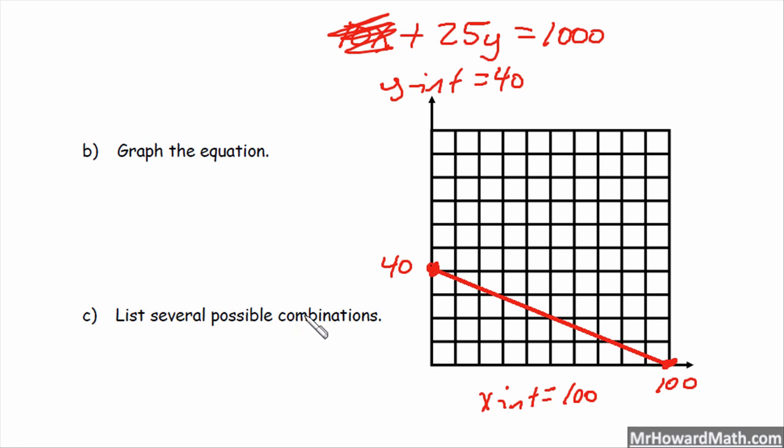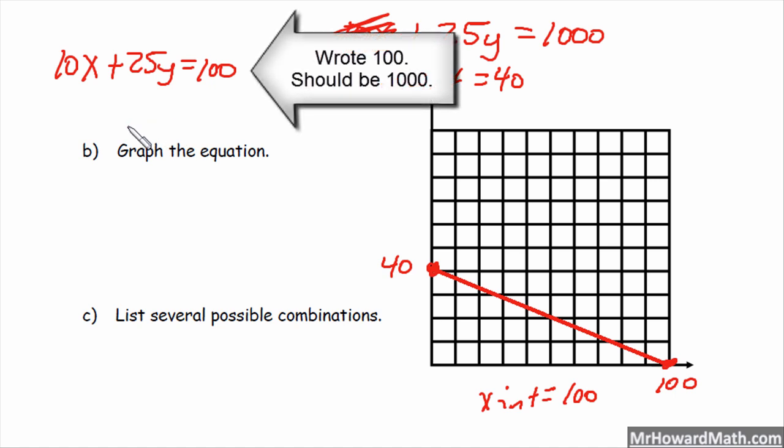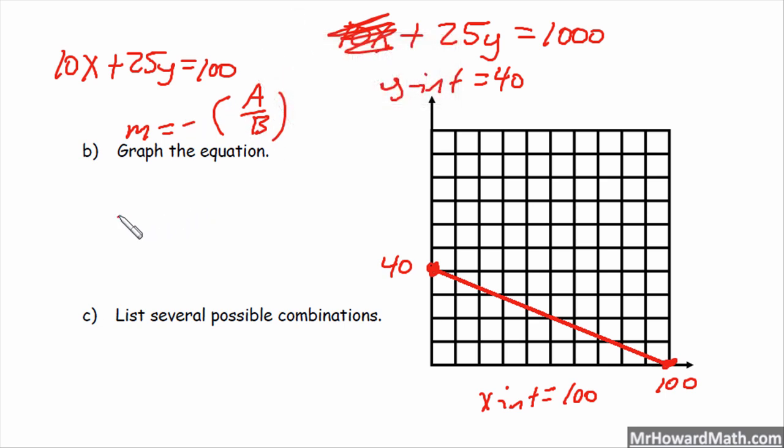Alright, now it says list several possible combinations. I need to rewrite the equation: 10X plus 25Y equals 1,000. We learned that the slope in standard form was equal to the opposite of the A value divided by the B value. So for us, that would be the opposite of 10 over 25, which would reduce to negative 2 fifths.